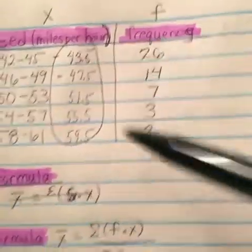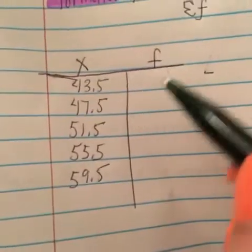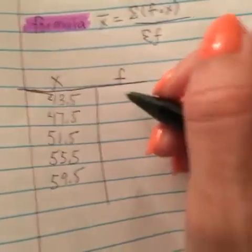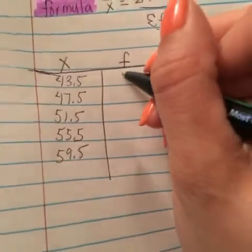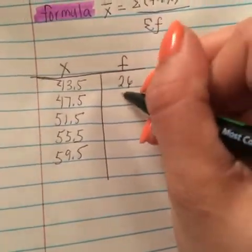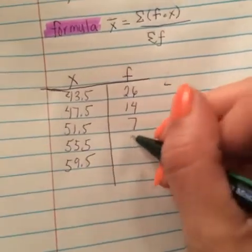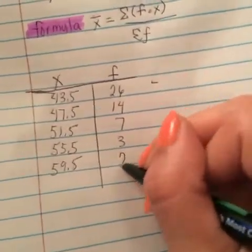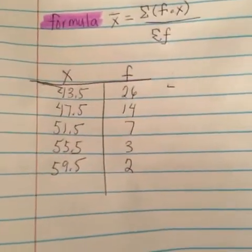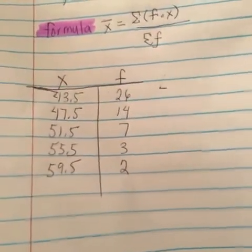Then I'm going to distribute my frequencies which are right here. I'm not going to do anything with those, I'm just going to put them where they were in the graph up top. So we have 26, 14, 7, 3, and 2.